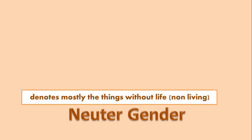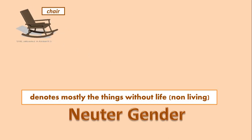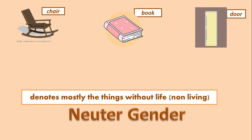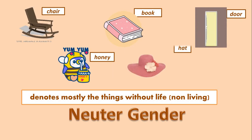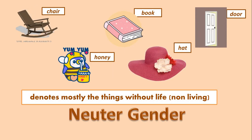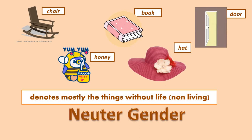Last is neuter gender. Neuter gender denotes mostly things without life — that means non-living things. A noun that stands for the name of a thing without life is said to be neuter gender. For example: chair, book, dough, honey, or hat. All non-living things come under neuter gender.